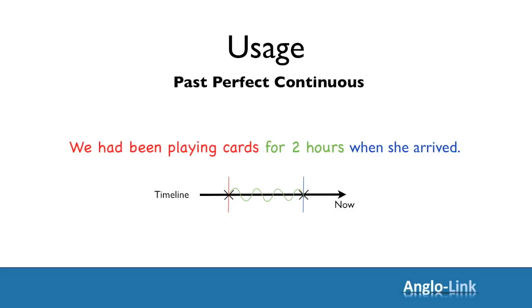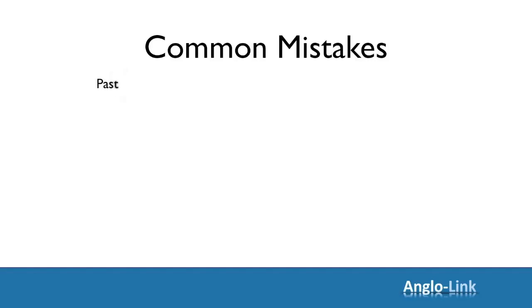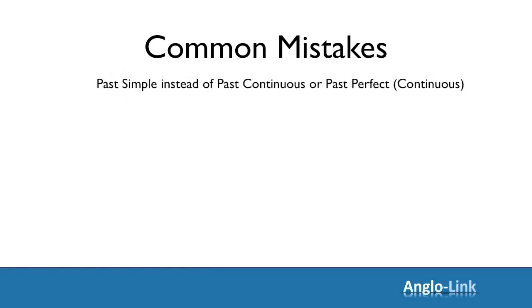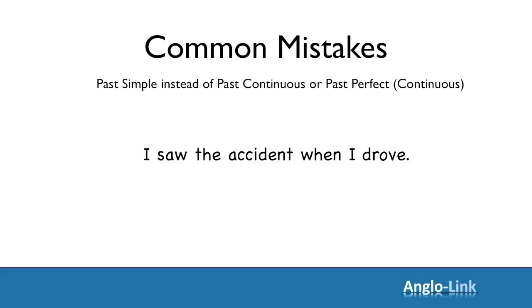That must have easily clarified the differences between these tenses for you. Let's now look at some common mistakes. The most common mistake is using the past simple instead of past continuous, past perfect, or past perfect continuous. For example: 'I saw the accident when I drove.' Here, one action was longer and was interrupted by another. So one of these verbs has to be in the past continuous. Drove should be past continuous: I saw the accident when I was driving.